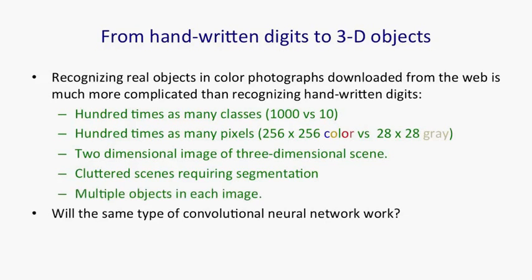So the question is: will the same kind of convolutional neural network that proved to be so good at recognising handwritten digits work for real colour images? In the domain of real colour images, we probably do need to wire in some prior knowledge, because if we try to do it with no knowledge wired in — putting in all the knowledge by generating extra training examples — the computational problem is still too large for current computers.